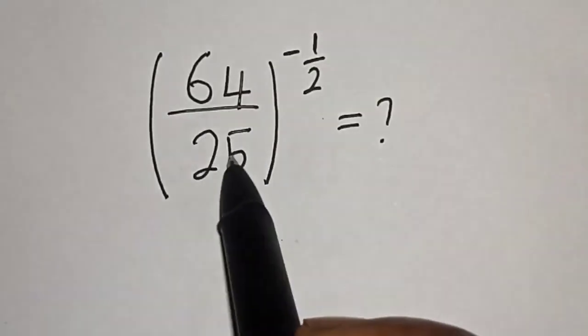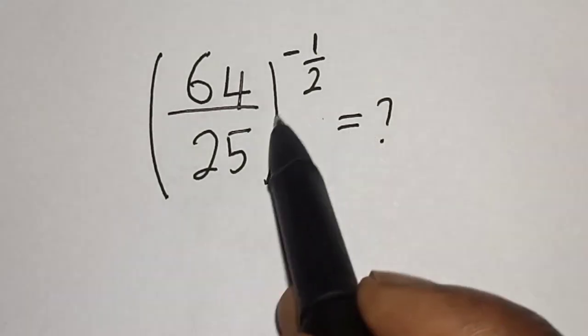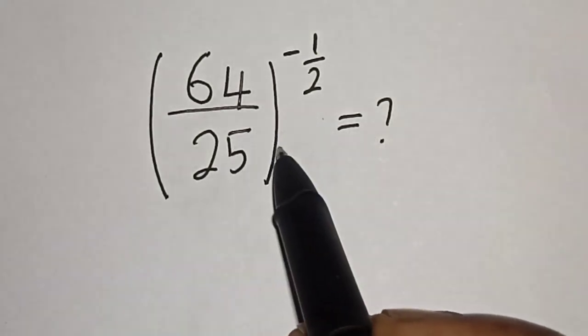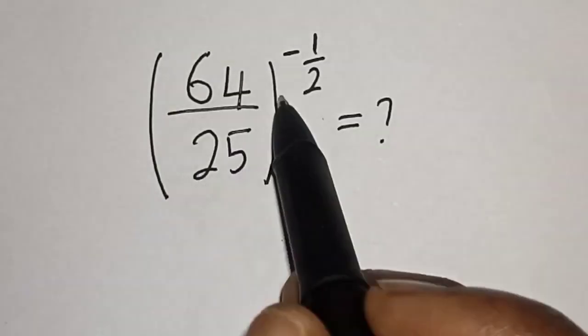64 divided by 25, all raised to the power of minus 1 over 2, is equal to what? Hi everyone, welcome to my class. In this class we want to evaluate this math problem: (64/25)^(-1/2).